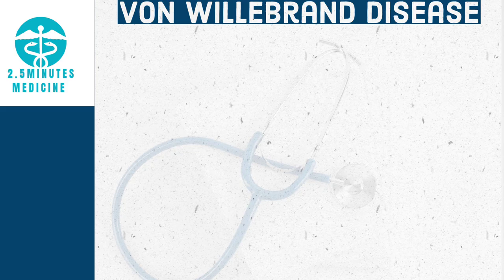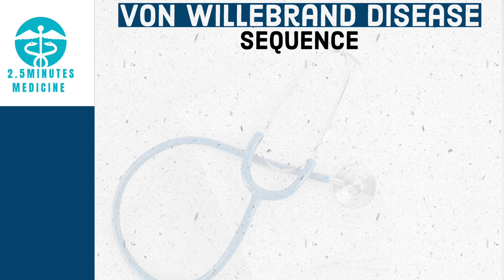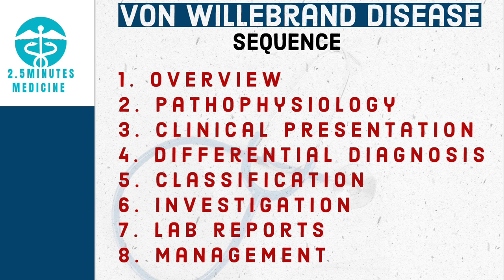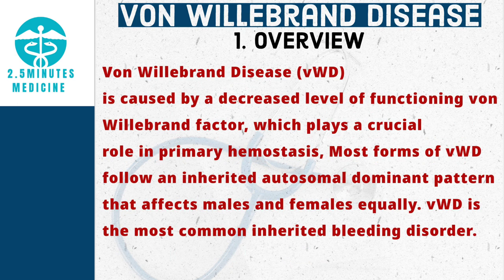This is a 2.5-minute medicine presentation on Von Willebrand disease. The sequence followed is: one overview, two pathophysiology, three clinical presentation, four differential diagnosis, five classification, six investigation, seven lab reports, eight management. Von Willebrand disease (VWD) is caused by a decreased level of functioning Von Willebrand factor, which plays a crucial role in primary hemostasis. Most forms of VWD follow an inherited autosomal dominant pattern that affects males and females equally. VWD is the most common inherited bleeding disorder.